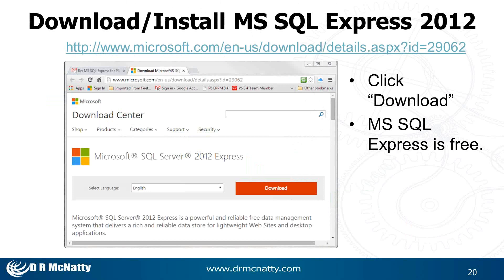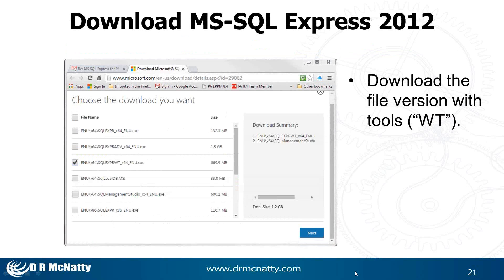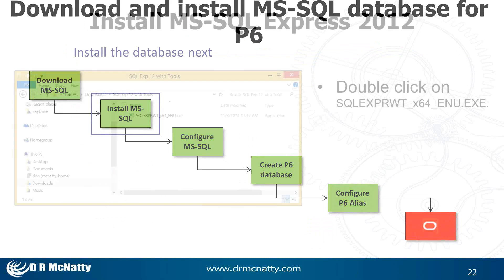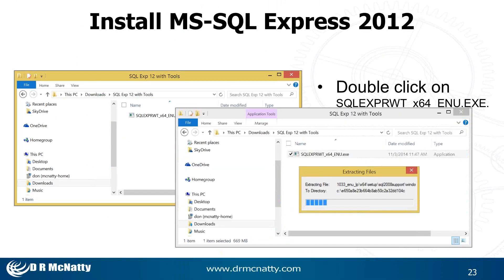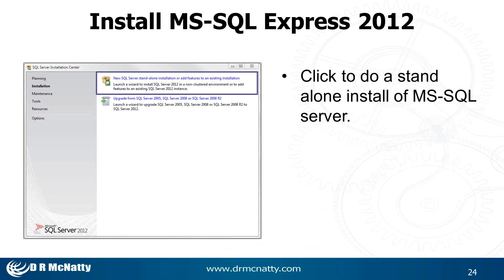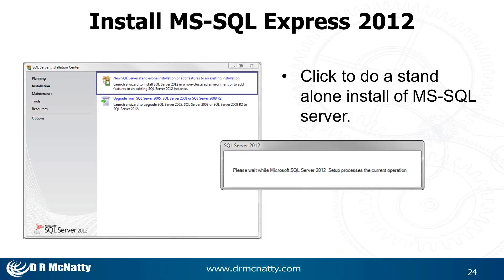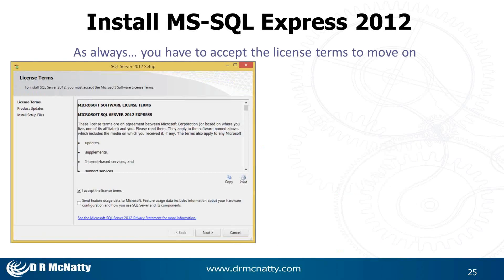We'll go through that process quickly here with these screenshots. You download Microsoft SQL from Microsoft.com — you can search for it once you get there. We're going to download Microsoft SQL 2012. Once it's downloaded, you're going to install it. It sets up an .exe file that you can install from. Once the files are extracted, you begin the installation and choose a new SQL Server standalone installation. You can agree to the license terms after you read them, of course.